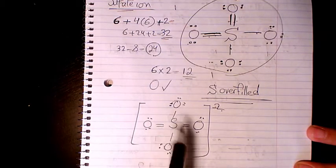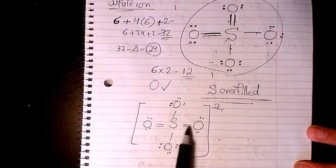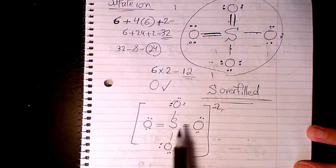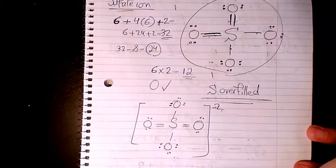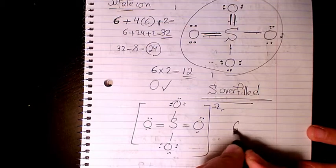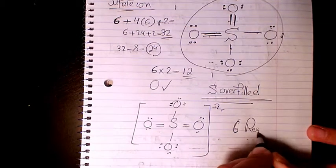So that is SO4 2- and as you see here these double bonds can resonate. We can have these two double bonds or these two double bonds or these two double bonds, stuff like that. So it's resonating and we have six different resonance structures.